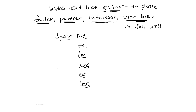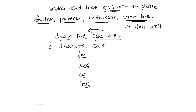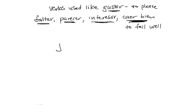So in Spanish, when talking about liking a person, we very often use the expression caer bien — 'to fall well.' If you want to say 'I like Juan,' you say Juan me cae bien — Juan falls well to me, in other words, I like him. If you're asking a friend 'do you like Juan?' you would ask: ¿Juan te cae bien? Does Juan fall well to you?